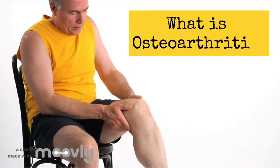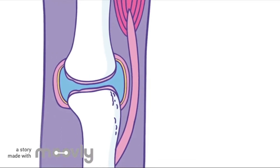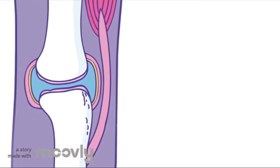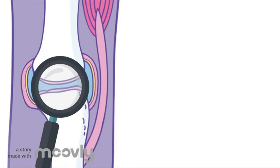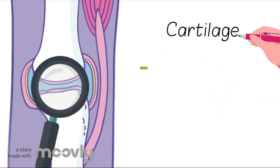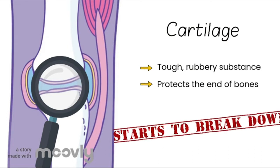So, what is Osteoarthritis? This is a picture of the knee — the joint — and the light purple part is cartilage. Cartilage is a tough, rubbery substance that protects the ends of bones. In Osteoarthritis, this cartilage starts to break down.